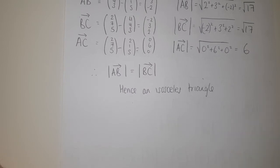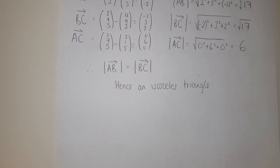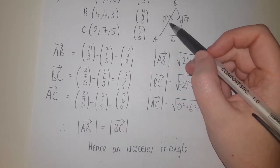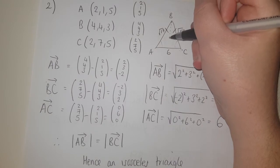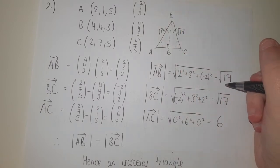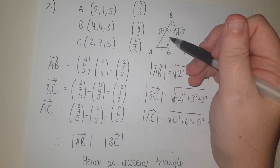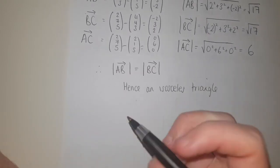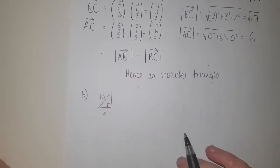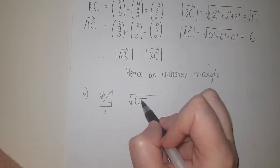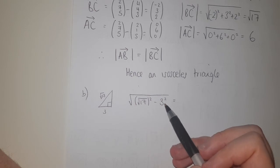Next we need to find the area of triangle ABC. Since it's isosceles with the two equal sides meeting at B, we can cut straight down the middle to get a right-angled triangle with base 3 and hypotenuse √17. Using Pythagoras, the height = √(17 − 9) = √8.